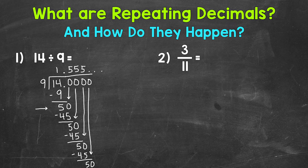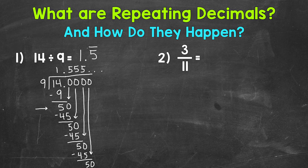So we get 1 and then repeating 5s that go on forever. We can express our answer using bar notation — we put a bar above that 5, and that shows that the 5 repeats. So our answer is 1.5 repeating.